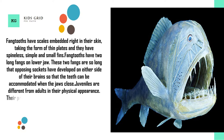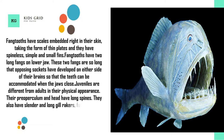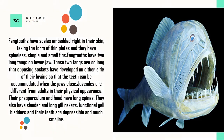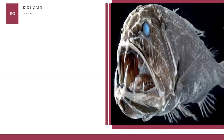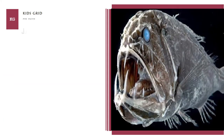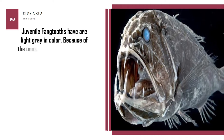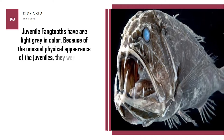Their preoperculum and head have long spines. They also have slender and long gill rakers, functional gall bladders, and their teeth are depressible and much smaller. Juvenile fangtooths are light gray in color. Because of the unusual physical appearance of the juveniles, they were once classified as different species by scientists.